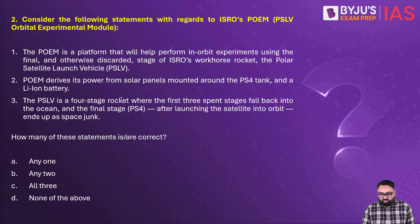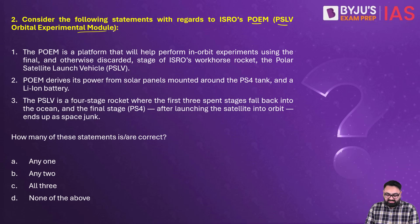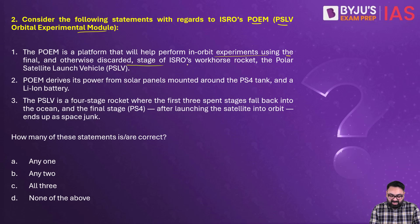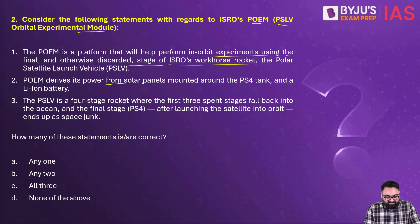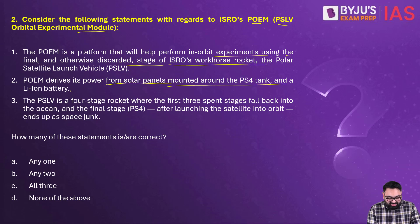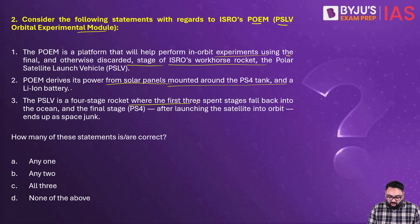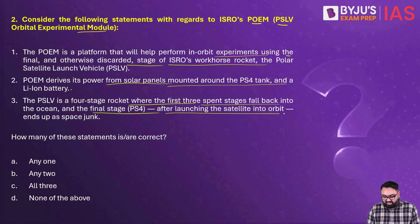Next, question number two. Consider the following statements with regards to ISRO's POEM, that is the PSLV Orbital Experimental Module. Number one: it is a platform that will help perform in-orbit experiments using the final and otherwise discarded stage of ISRO's workhorse, the PSLV. Second: it derives its power from solar panels mounted around the PS4 tank and the lithium-ion battery. Third: the PSLV is a four-stage rocket where the first three spent stages fall back into the ocean, and the final stage, after launching the satellite into orbit, ends up as space junk.